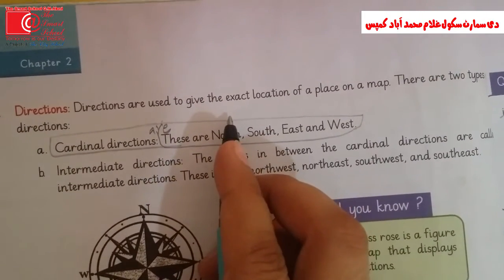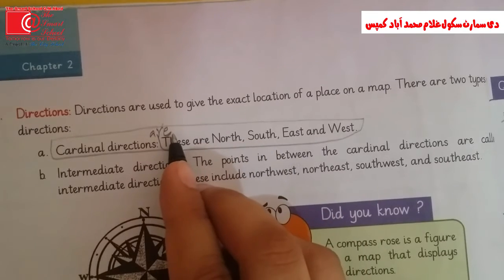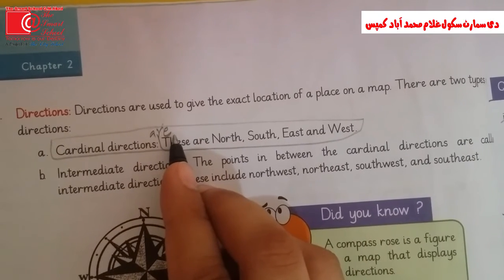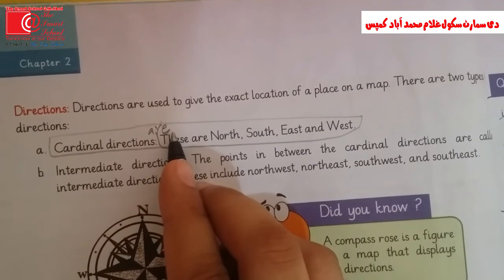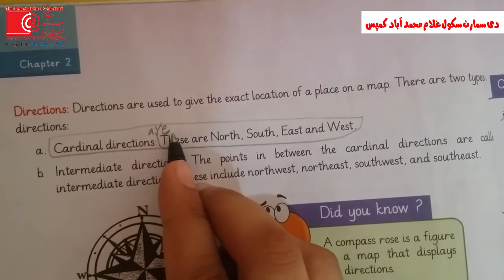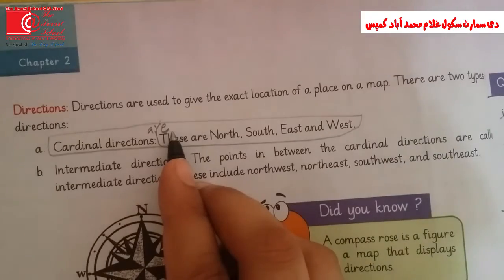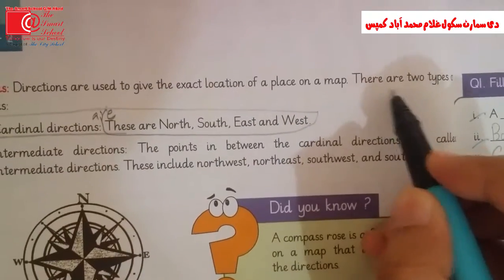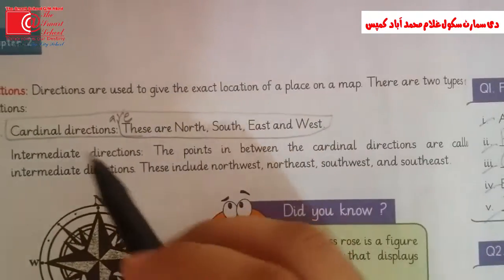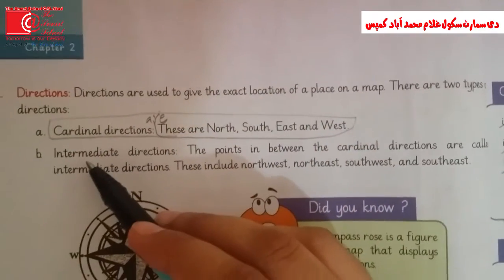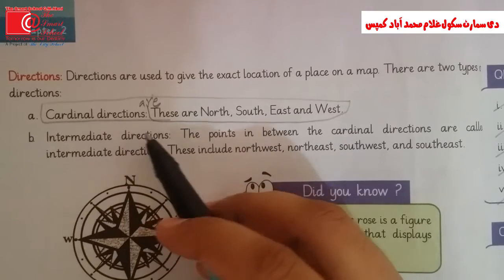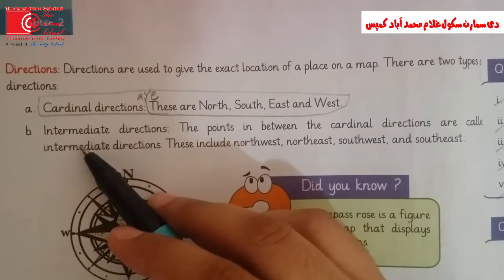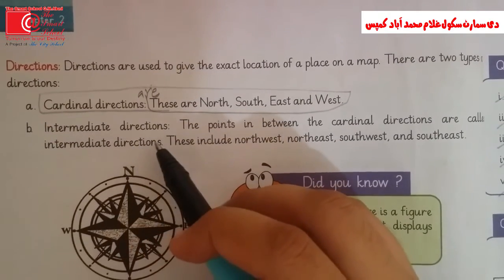Directions are shown for any place, city, or country. There are two types of directions: one, cardinal directions, and two, intermediate directions.